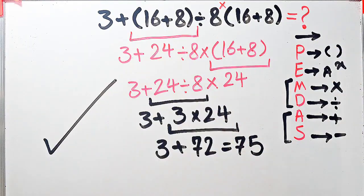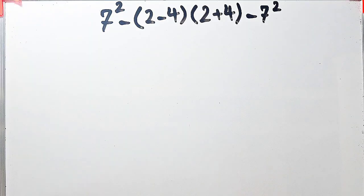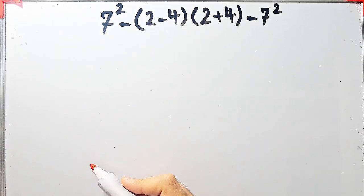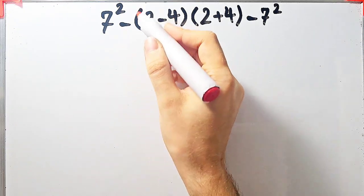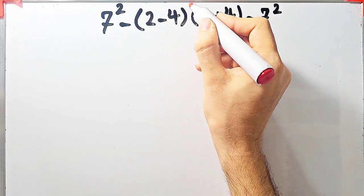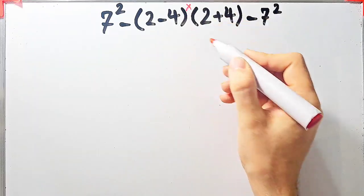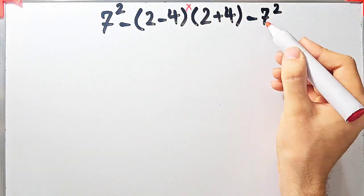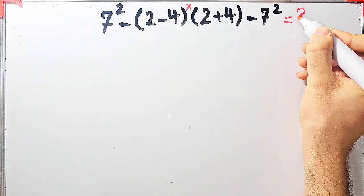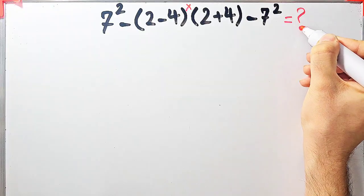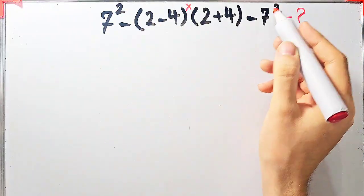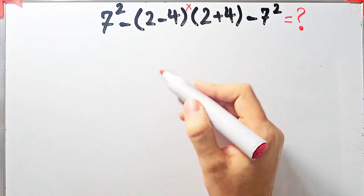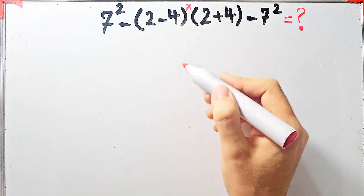Let's solve another question about the PEMDAS rule. 7 to the power of 2, minus open parentheses, 2 minus 4, closed parentheses, then times open parentheses, 2 plus 4, closed parentheses, minus 7 to the power of 2. What is the answer? In this question, we have exponents, subtraction, parentheses, multiplication, and addition.